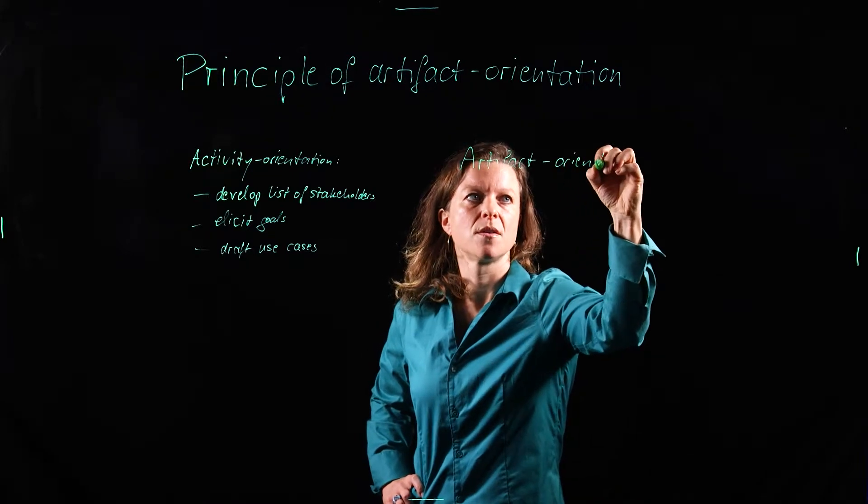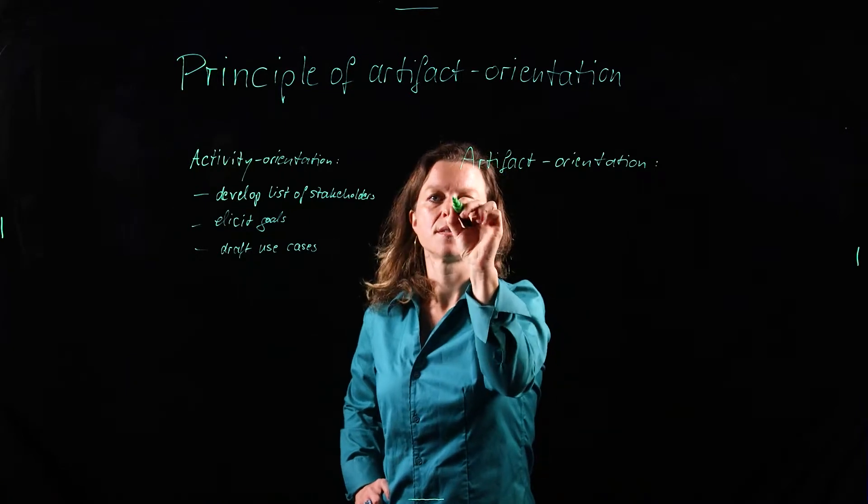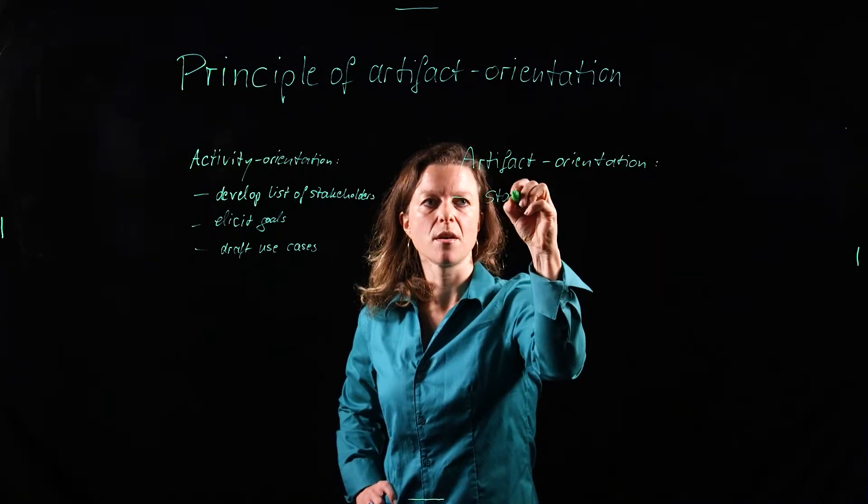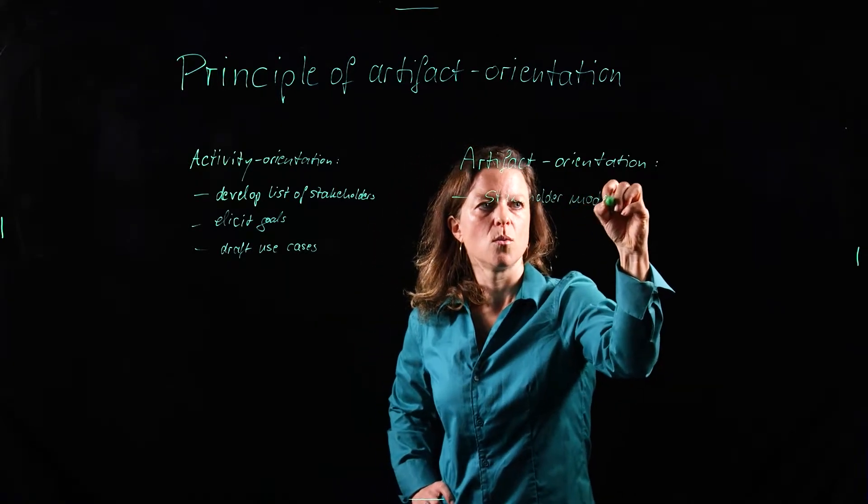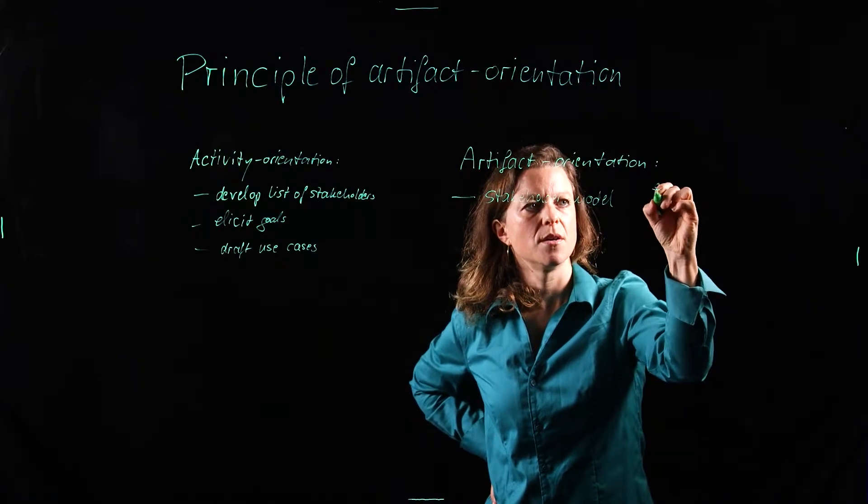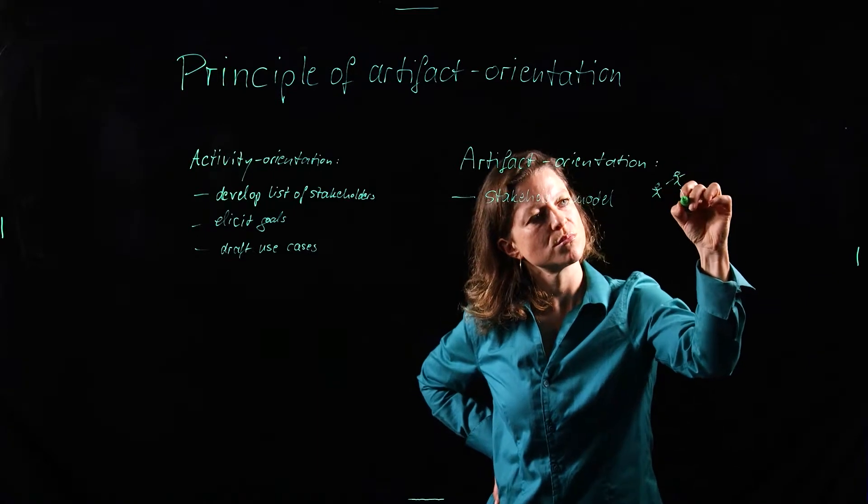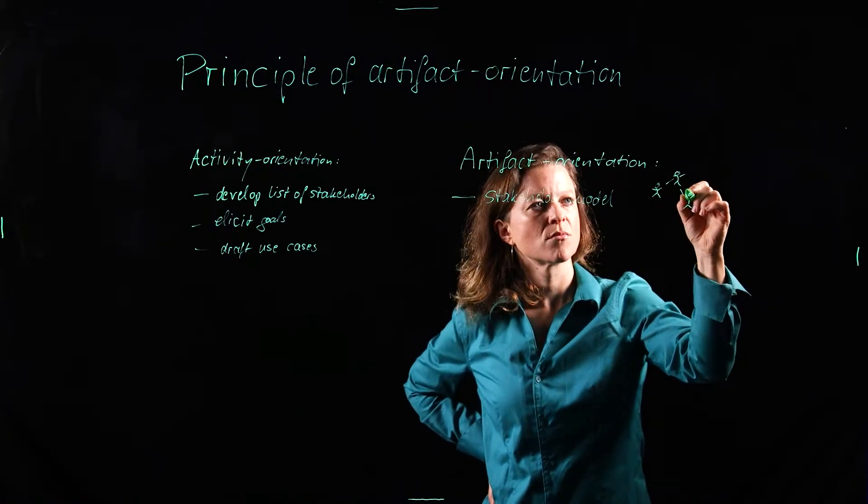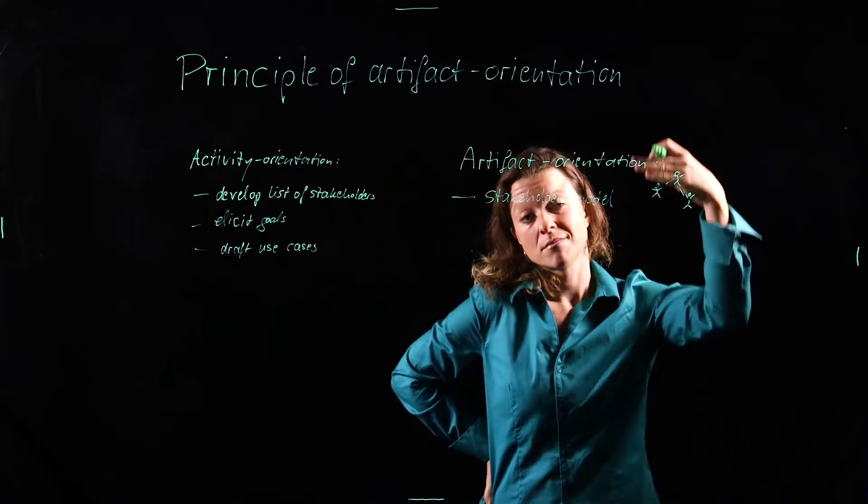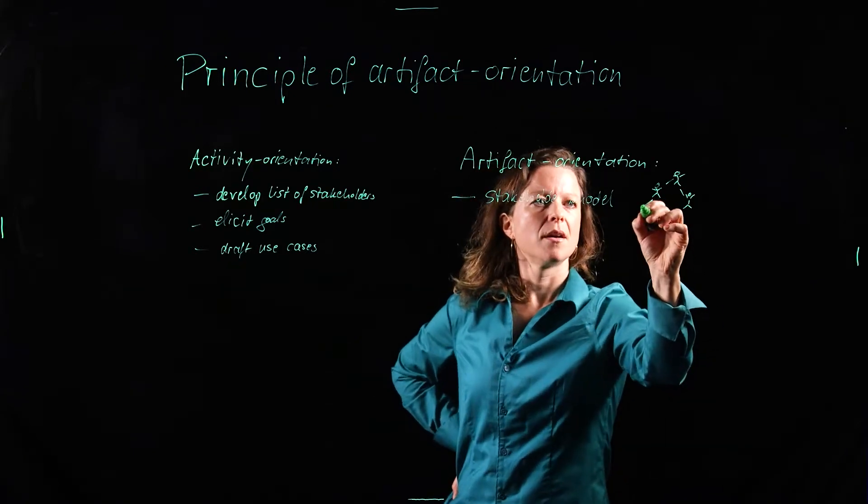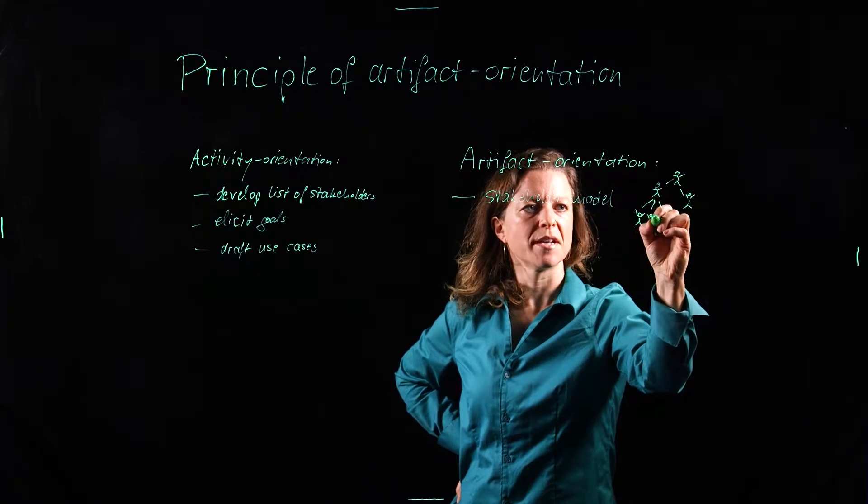So artifact orientation takes this and says we're going to need a stakeholder model, which means we're going to have a UML hierarchy of actors. And this person obviously is the boss of that person and that person. At least they're higher in the packing hierarchy. And that person has a team working with them.